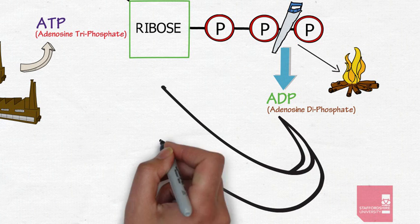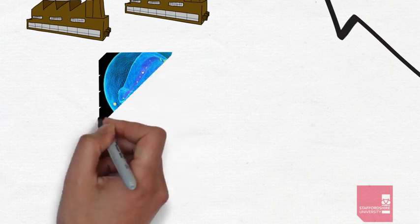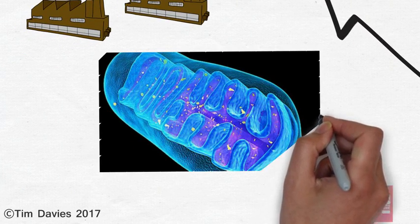ADP can then be converted back to ATP for further use. All of this is made possible by the ATP factories, the powerhouses of the cell, the mitochondria.